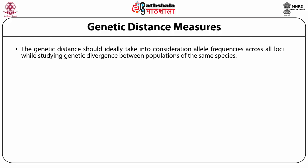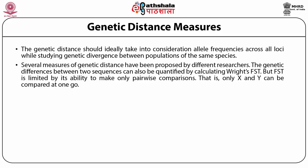The genetic distance should ideally take into consideration allele frequencies across all loci while studying genetic divergence between populations of the same species. However, only a subset of all loci is sampled in practice. Several measures of genetic distance have been proposed by different researchers. The genetic differences between two sequences can also be quantified by calculating Wright's FST, but FST is limited to only pairwise comparisons. Introduction of genetic distance estimates circumvented this problem by enabling comparison of more than one pair at the same time.